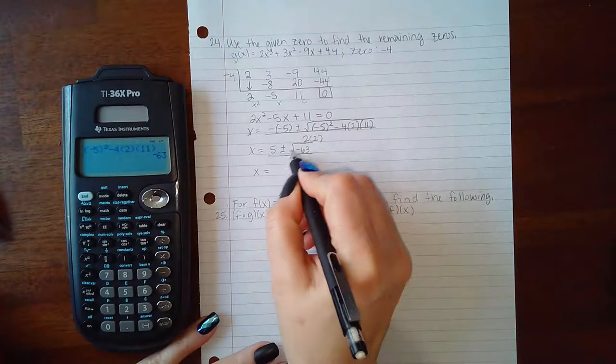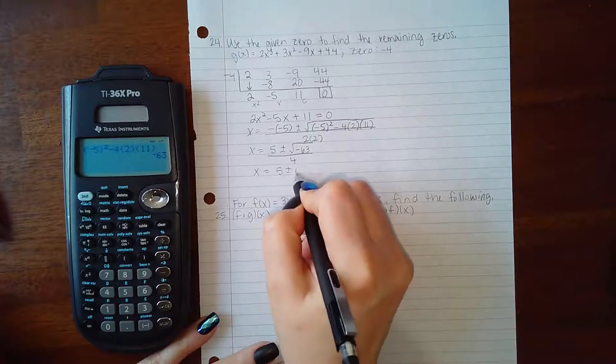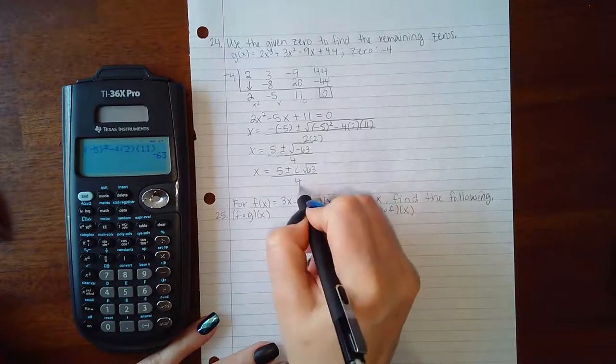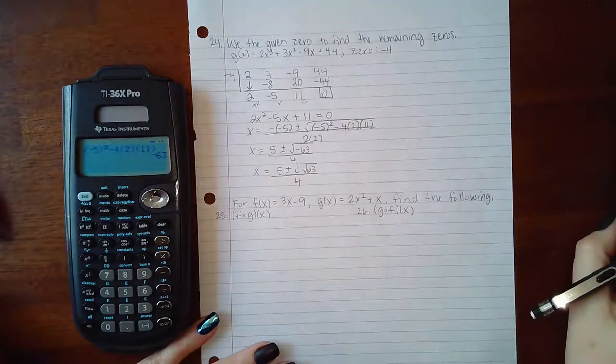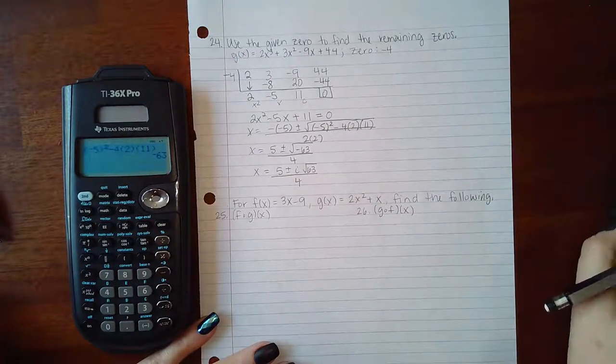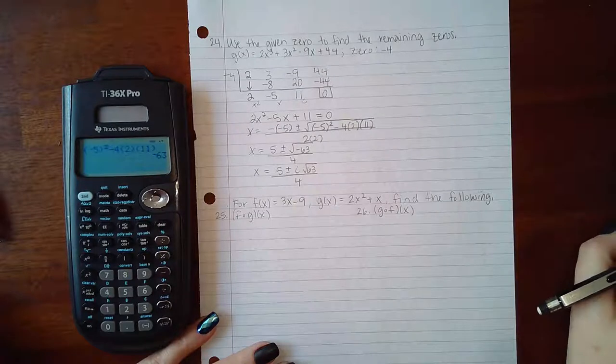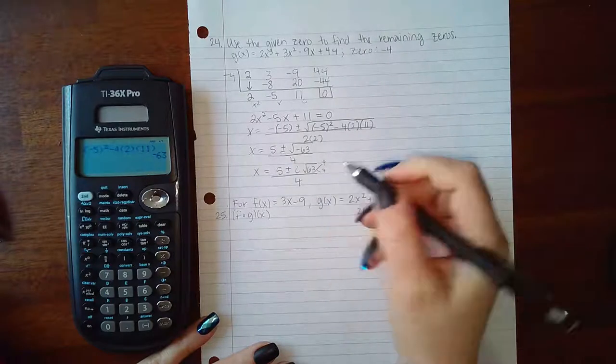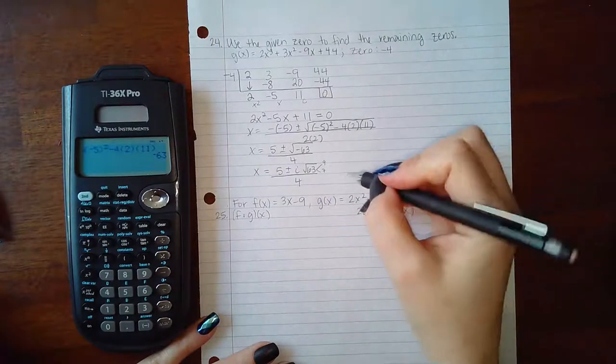I can take this negative out by using an i because the square root of a negative is imaginary. And then you could try to reduce the square root.